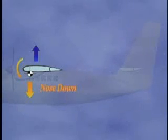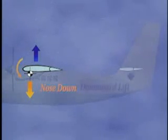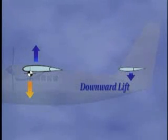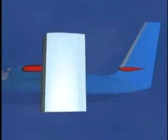The forces acting at these two points cause a nose-down pitching moment, which must be counteracted by the horizontal tail. To achieve the required downward lift, the tailplane is designed as an upside-down wing.